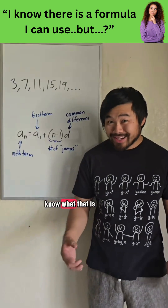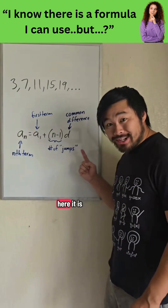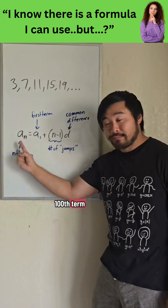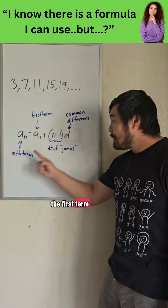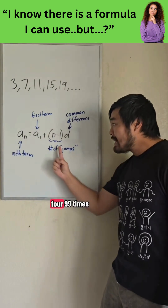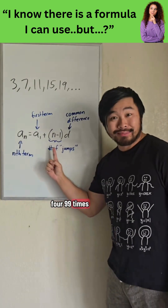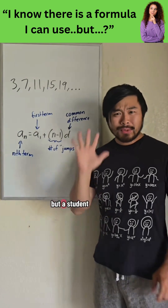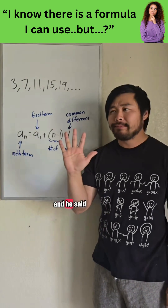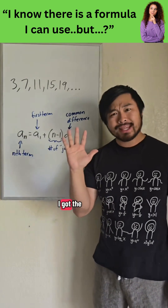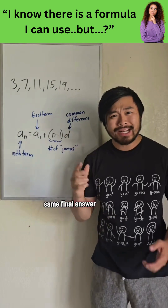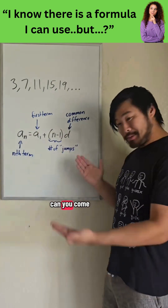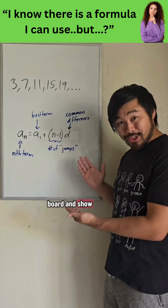Now, just in case you don't know what that is, here it is. To find the 100th term, we start at the first term and we jump 499 times. This did come up, but a student raised his hand and said he got the same final answer, but did it in a different way. So I said, great, can you come up to the board and show us what you did?